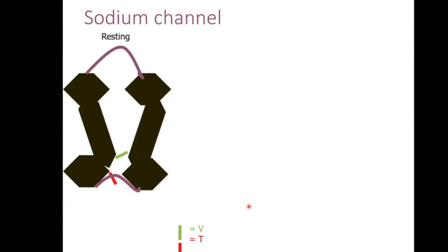Regarding how a sodium channel works: the channel has two gates — the voltage-gated channel (green) and the time-gated channel (red) — described in the two-gate theory of Hodgkin and Huxley. The voltage-gated channel depends on the voltage change between inside and outside, while the time-gated channel opens and closes at definite time intervals. Only when both gates are open can ions pass through.